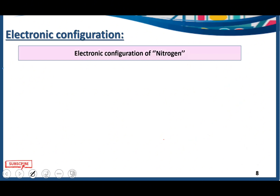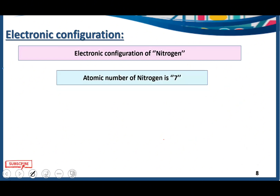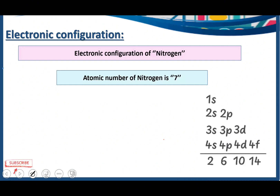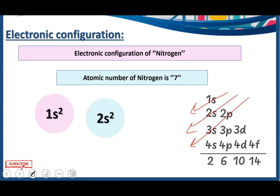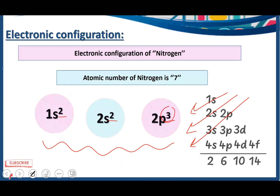Electronic configuration of nitrogen — atomic number 7. We write 1s2, 2s2, and 2p3. Counting: 2+2=4, 4+3=7. The electronic configuration of nitrogen is 1s2, 2s2, 2p3. The valence electrons are in the p subshell, so nitrogen is a p-block element.